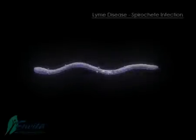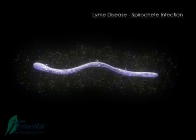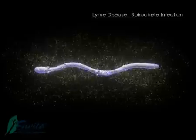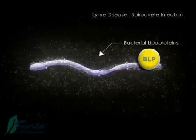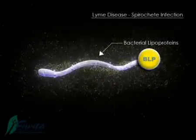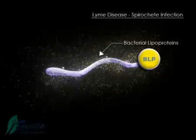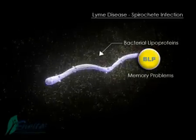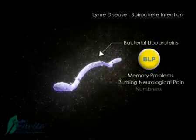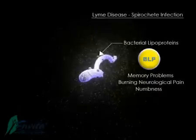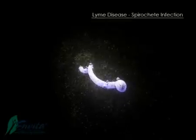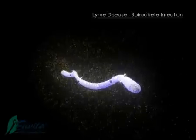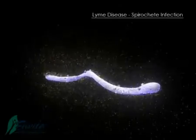Lyme is characterized by a spirochete infection. The spirochete releases bacterial lipoproteins, which are a neurotoxin. The BLP neurotoxins are associated with symptoms like memory problems, burning and neurological pain, and numbness. The spirochete moves in a corkscrew-like motion as it burrows its way through the tissue and organs of the body.